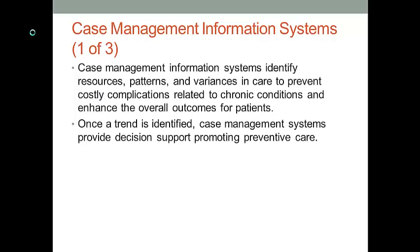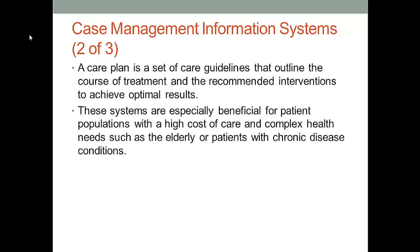After collecting a large population of patients' data, we can build an analytical model to identify this correlation. If the correlation really exists, next time when we get a new patient, we can ask what type of jobs the patient is doing, and then we can use our analytical model and the case management information system to predict how likely this patient has diabetes. Another important function is to provide a better care plan to patients. Similarly, if we find a correlation between the patient's job and the chance of getting diabetes.